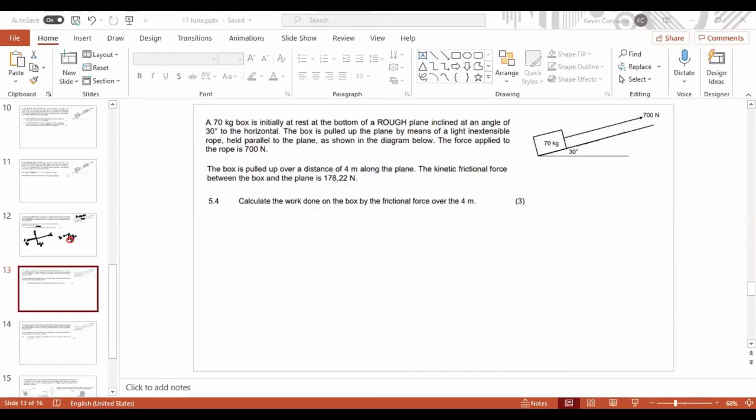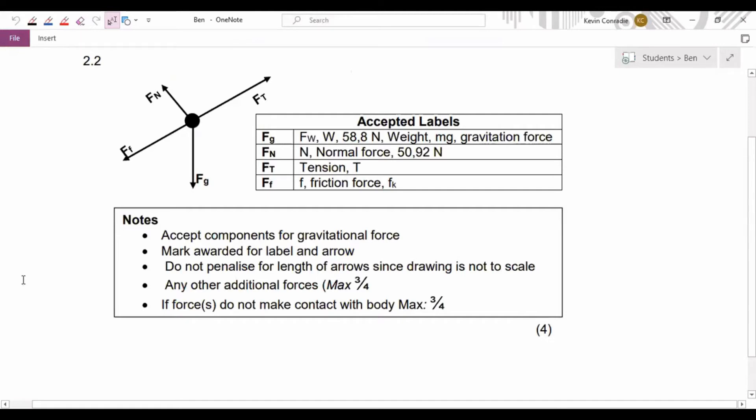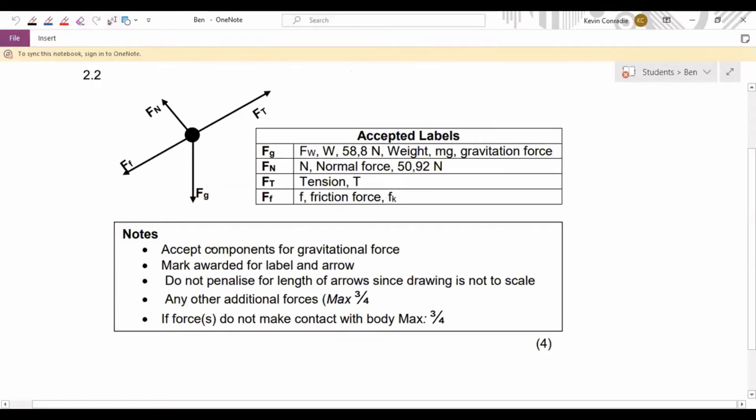Right. I took a screenshot of a typical memo, so that you guys can see for yourself what they do in the exams. Okay, so in this exam, they used FG going down. But then look what they say here under the notes. Accept the components for gravitational force. What that means is that if you use the components instead, then you are going to get your marks. Look at this, guys. FG. You don't have to say FG. You can say FW, W, 58.8 N, Weight, MG, Gravitation force. There are so many different things that you are allowed to do. There is no one correct answer.